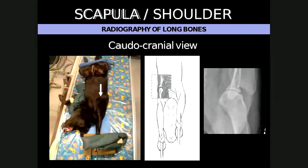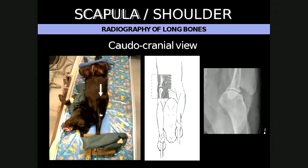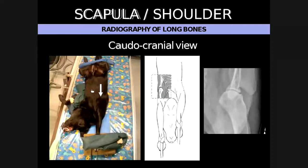For the craniocaudal view, the patient is in dorsal recumbency and the affected limb is pulled cranially so as to get the humerus as close as possible to parallel to the cassette. The patient body should be rotated 10 to 15 degrees to the opposite side to separate the scapula from the ribcage and to prevent superimposition of the thorax with the shoulder or the scapula. One needs to center on the shoulder joint or midway between the shoulder joint and the dorsal margin of the scapula.